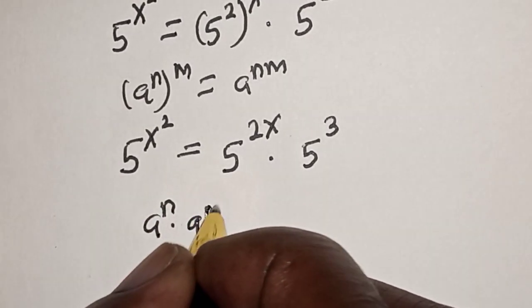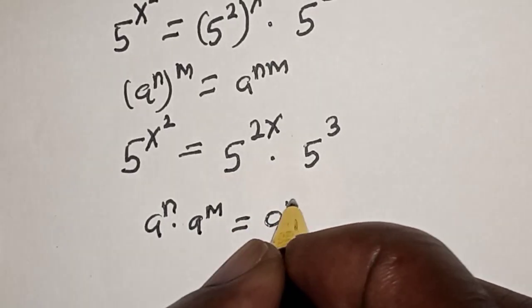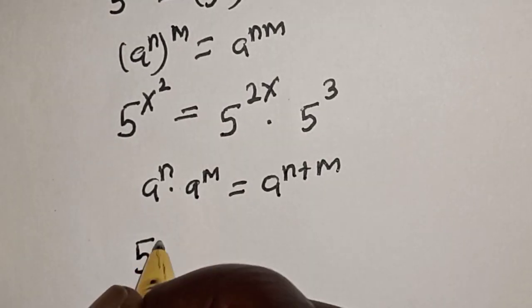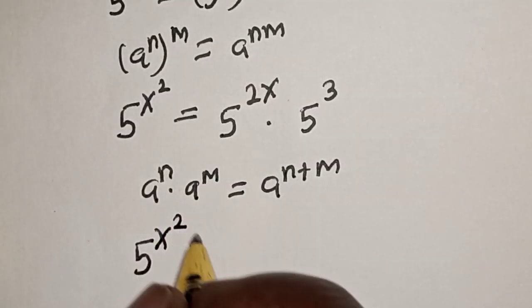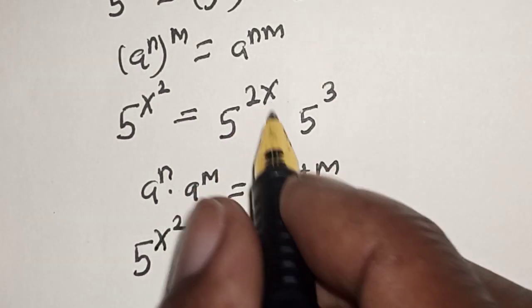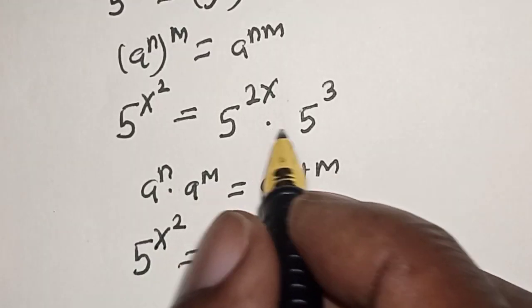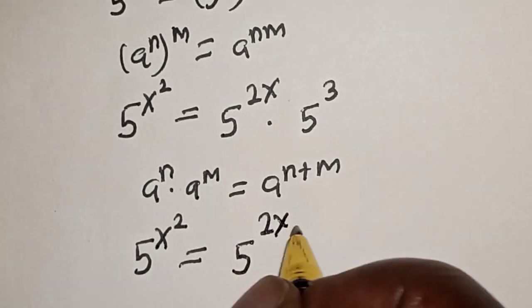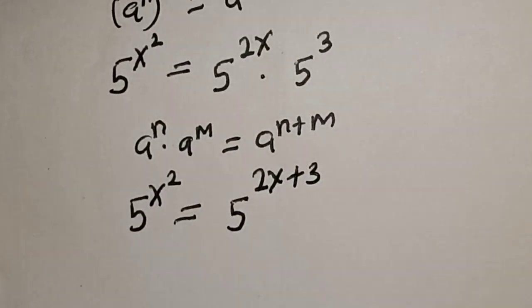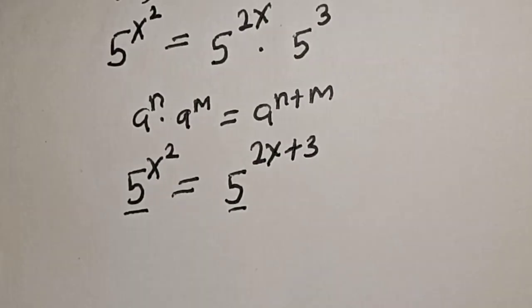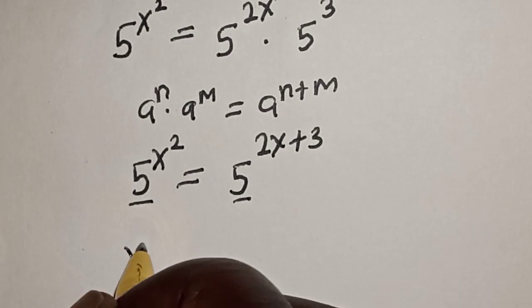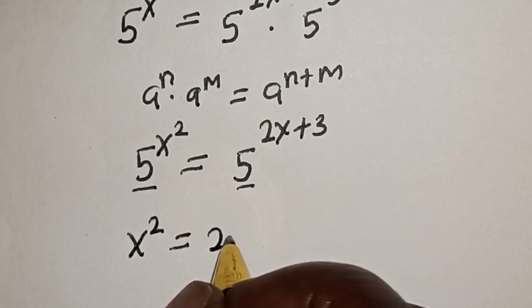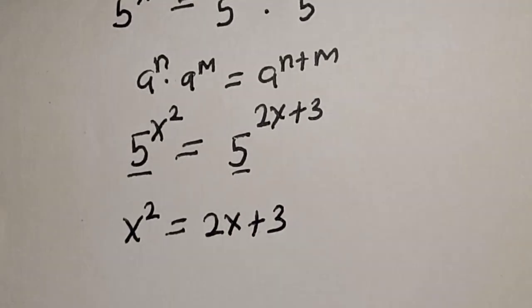Also, remember this rule: if you have a raised to power n multiplied by a raised to power m, this is equal to a raised to power n plus m. Then we have 5 raised to power s squared is equal to 5 raised to power 2s plus 3. Now, they have the same base 5, so we work with the exponent: s squared is equal to 2s plus 3.